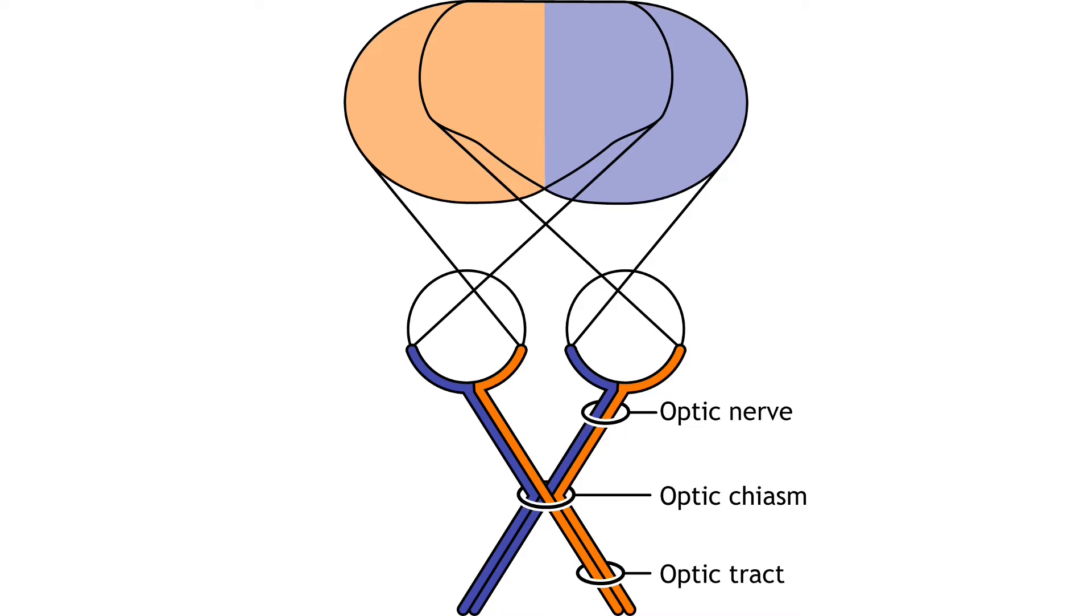Since the axons from the nasal retina cross to the opposite side of the nervous system, but the temporal retina axons do not, this leads to the brain processing input from the contralateral, or opposite side, visual hemifield. Therefore, the right side of the brain receives visual information from the left hemifield and vice versa.